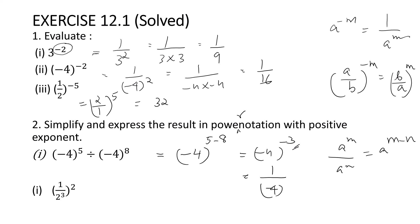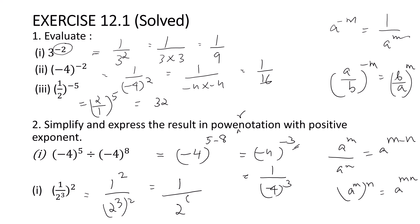Similarly, the second one: (1 by 2 raised to 3) whole squared means 1 squared by (2 raised to 3) whole squared. 1 squared is 1. For (2 raised to 3) whole squared, we use the rule a raised to m raised to n equals a raised to m into n, so here 3 into 2 gives 2 raised to 6.